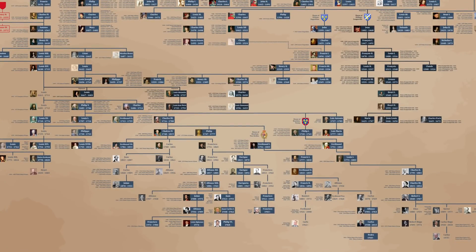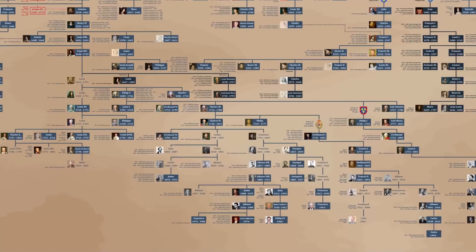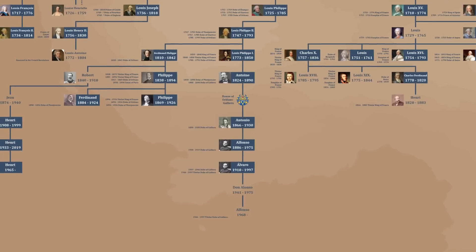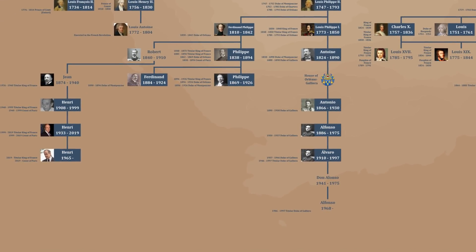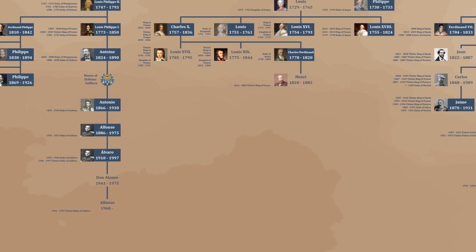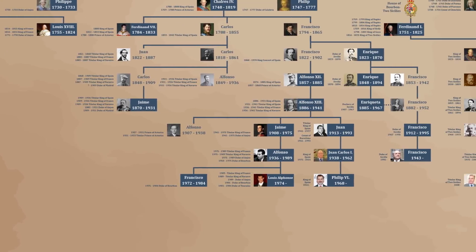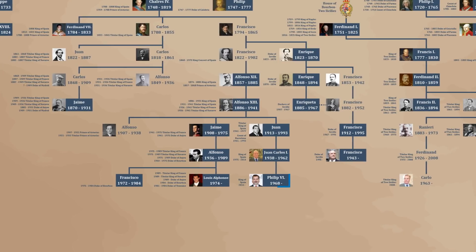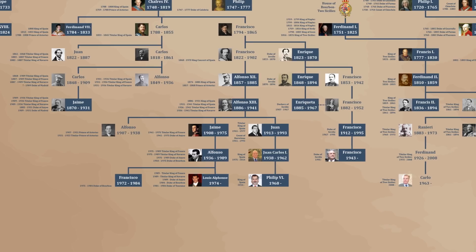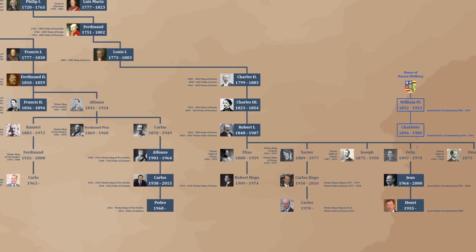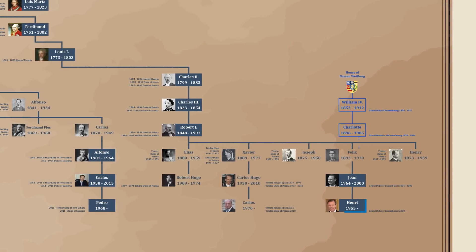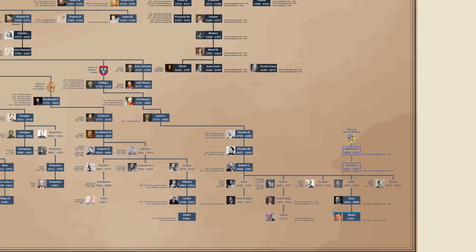I appreciate that at the very bottom, whoever made this chart put the House of Orléans all the way on the left, showing that they are the senior house these days, even though technically from a genealogical perspective, the Spanish Bourbons are actually senior. You can see the King of Spain in the middle, as well as Louis Alphonse who calls himself the head of the House, because genealogically speaking he is the most senior person on the tree. And all the way to the right you've got Henri, the current Grand Duke of Luxembourg as well. Amazing chart.